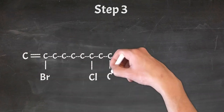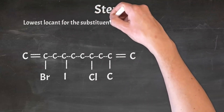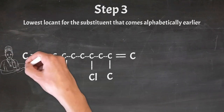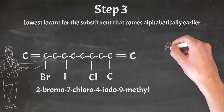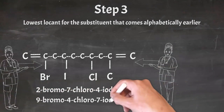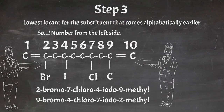If all substituents are at the same position from both ends, follow rule number 5: number the chain from the end where the substituent that comes alphabetically earlier gets the lowest locant. First number the chain from one end and write the substituents in alphabetical order including their locants, then number from the other side and do the same. Compare locants one by one. Bromine is at position 2 from the left side, while the same bromine is at position 9 from the right side. Therefore we will number the chain from the left side.